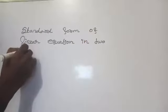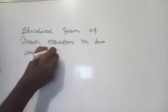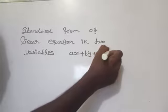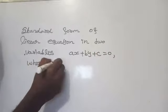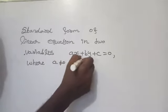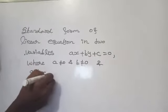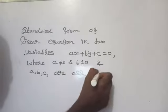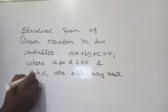Tell me, what is the standard form? The standard form of a linear equation in two variables is ax plus by plus c equal to 0, where a is not equal to 0 and b is not equal to 0, and a, b, c are all real numbers.